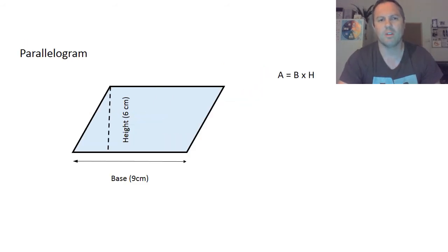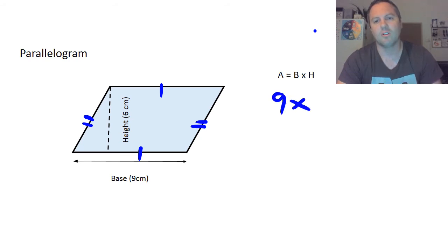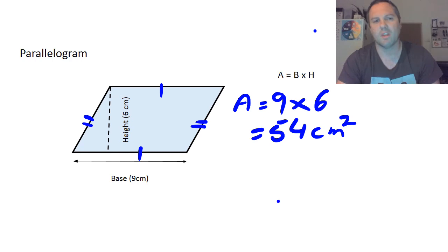Moving forward — the parallelogram. What's special is that opposite sides are parallel and equal. The rule is area equals base times height, just like a rectangle. Our base is 9 and height is 6, so 9 × 6 = 54 centimeters squared. Important: don't use the slanted side measurement for height — if you use that you'll get the wrong answer, because the height changes independently of that side.